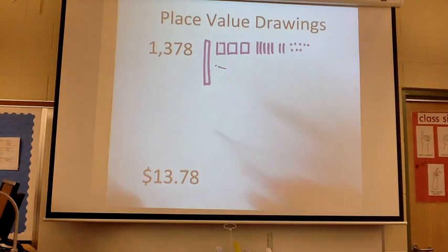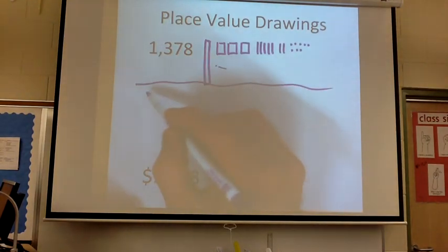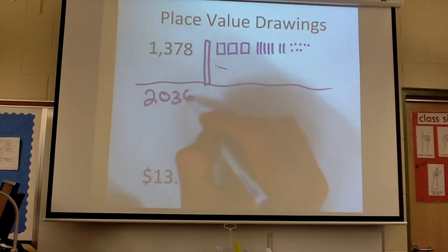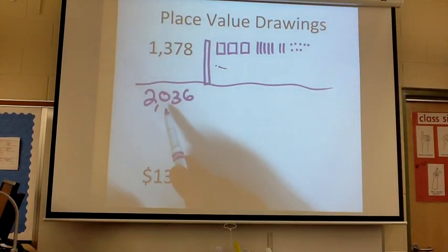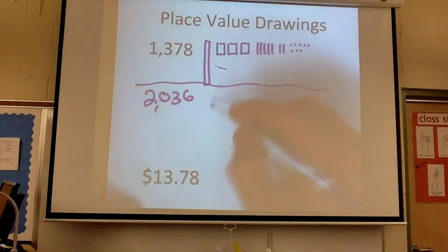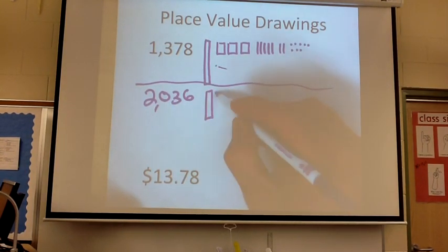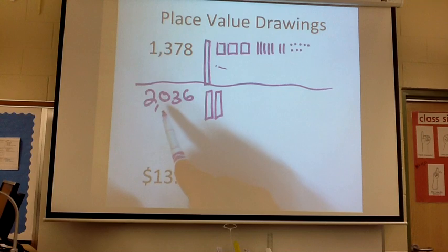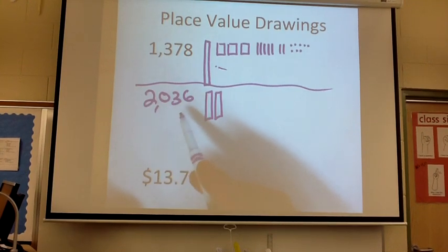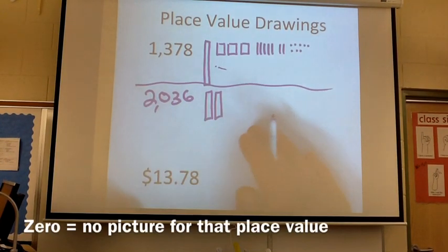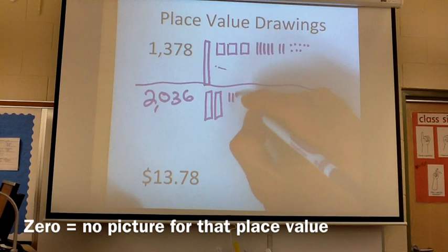Now, kids run into trouble sometimes with a number like this that has a zero in it. Really all they need to do is just write down a picture for each place that has a value. So they just wouldn't include the hundreds on this one. So 2036 would look like that.